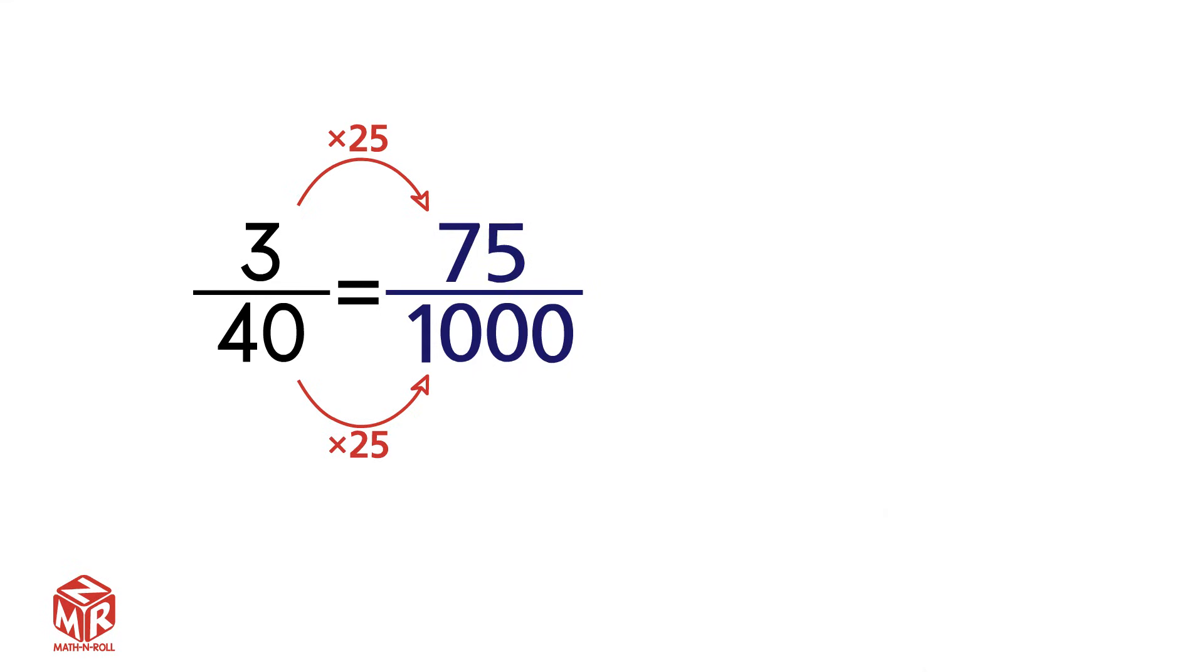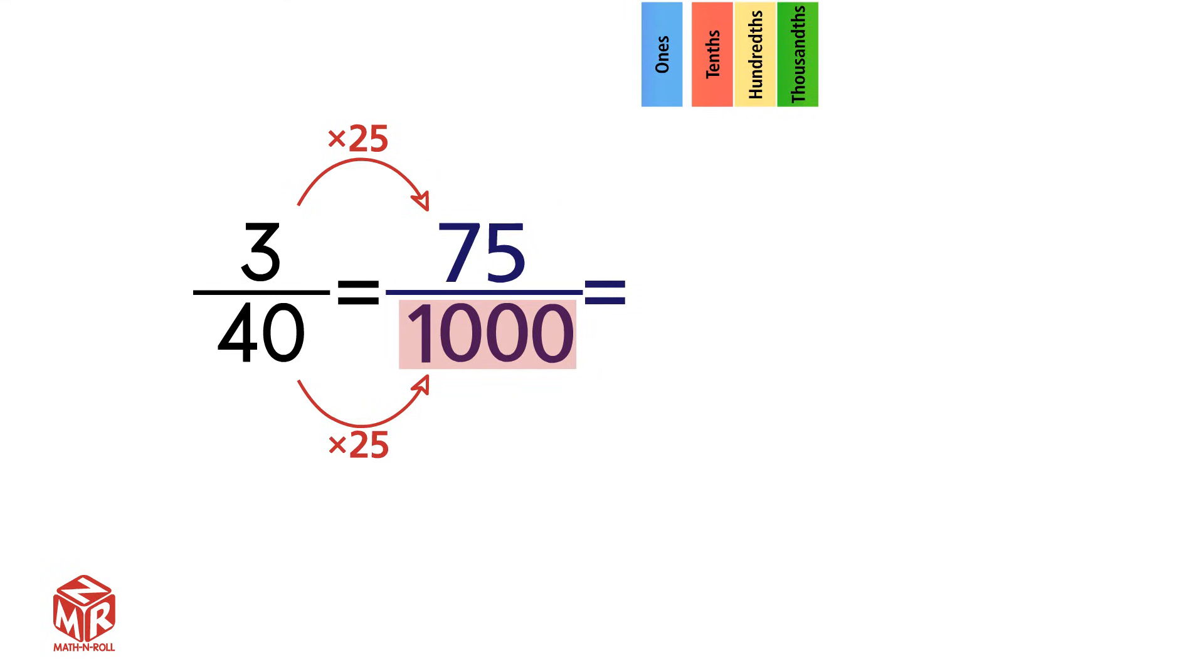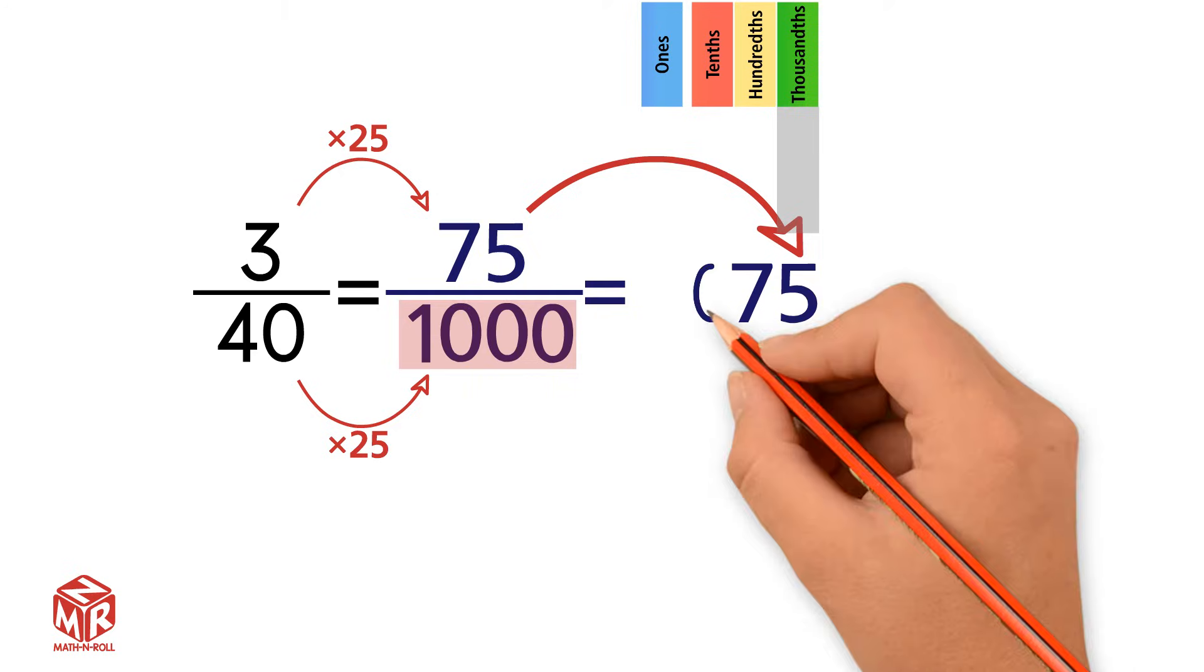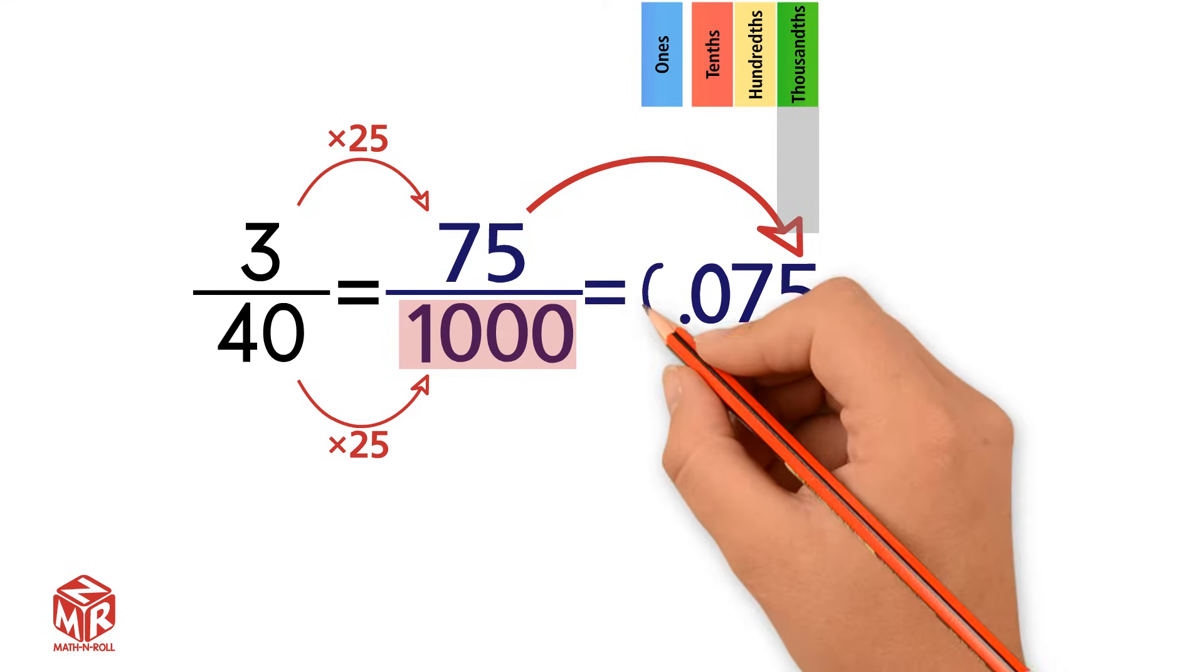3 times 25 equals 75. We have 75 over 1000, or 75 thousandths. Let's write it as a decimal. We place the last digit in the thousandths column. So we have a 5 in the thousandths column, and a 7 in the hundredths column. Take a look at the numerator. We only have two digits. We don't have a third digit to put in the tenths place. So we use a zero as a placeholder. Then, we add the decimal point and the zero.